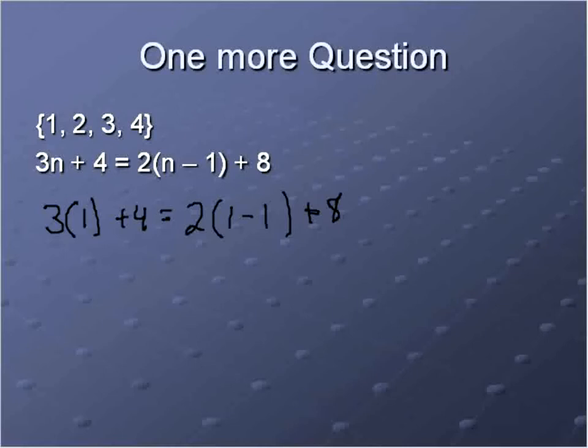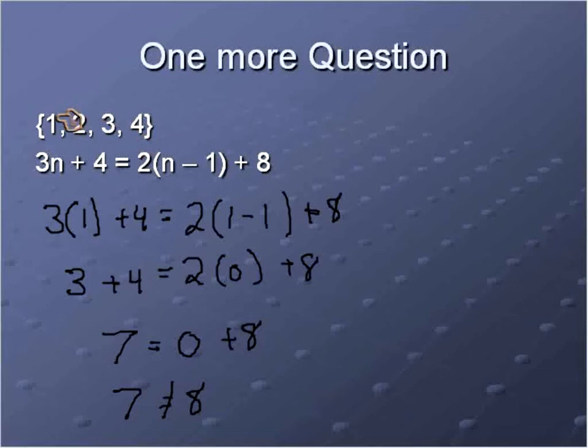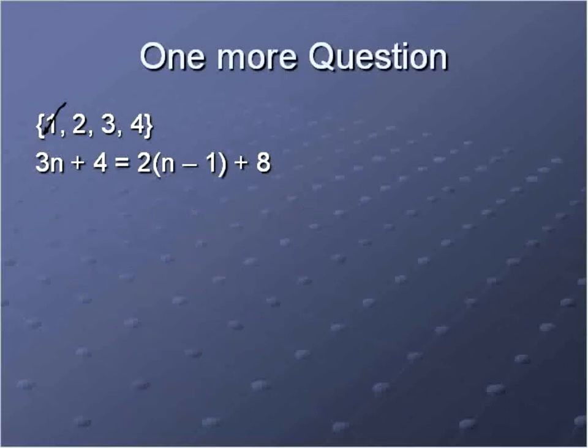So 3 times 1 is 3, and on the right side over here we do what's inside the parentheses first. 3 + 4 is 7, 2 times 0 is 0, ooh, they're very close, but not correct. So we tried putting in the first number from our set, it didn't work. I'm going to just delete all that so we have space to do our next one. Now we'll move on to the next number inside of our set, which is a 2.